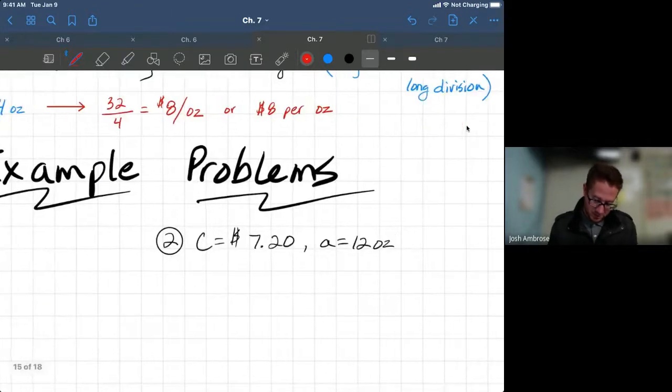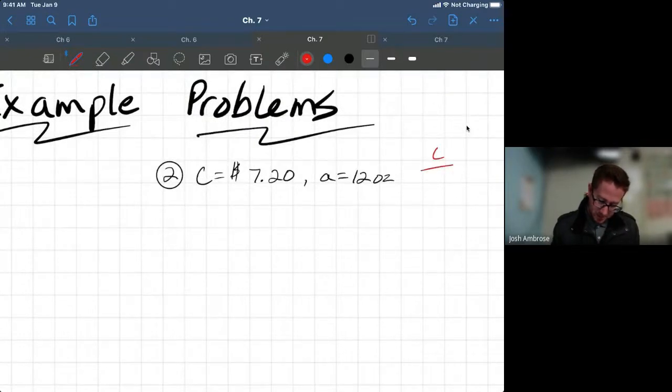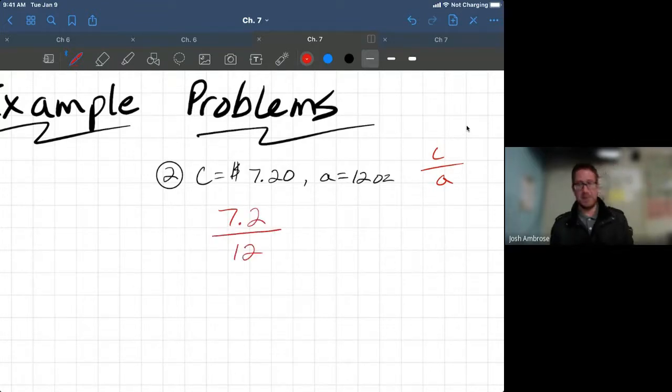And let's do example problem number two. Again, total cost divided by amount, 7.2 divided by 12. There should be a couple red flags going off in your head. One, I'm working with a decimal, don't like the decimals. So, let's get rid of it. Move this decimal over one space, making 7.2 actually become 72. But what you do to one, you must also always remember to do to the other. So, that means there is a decimal right here for 12. We're going to move it one time to the right, filling it in with a zero, meaning this is now going to be 120.